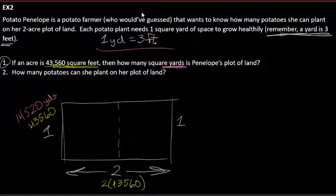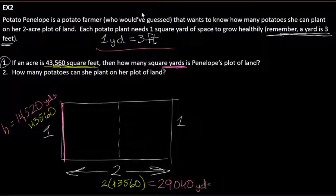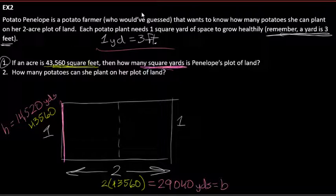So this dimension — our height — is 14,520 yards. And over here we have two times 14,520, giving us 29,040 yards. Now I have my base and my height in yards and can find the area. Our base is 14,520 times height 29,040.